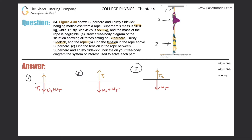Part B asks us to find the tension in the rope above the superhero, which is T1. Using Newton's second law, the sum of forces in the y-direction equals mass times acceleration. We have T1 pointing up and the weights of both superhero and sidekick pointing down, with a total mass of 90 plus 55 kilograms. Since they're motionless, acceleration is zero, so that term cancels out.